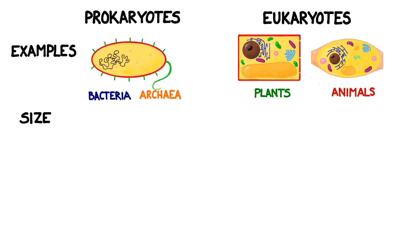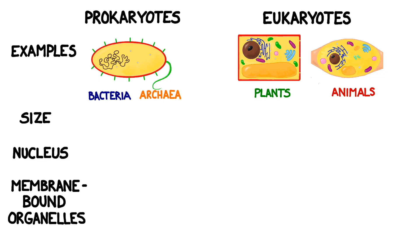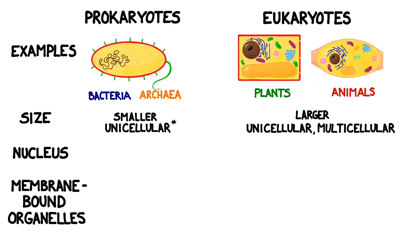The two categories of cells also differ in size, how they pass on their genetic material, and whether or not they have membrane-bound organelles. Prokaryotic organisms tend to be smaller, whereas eukaryotes have the potential to be much larger. Prokaryotes are almost always unicellular, with the exception of some bacterial colonies, whereas eukaryotes can be either unicellular or multicellular.